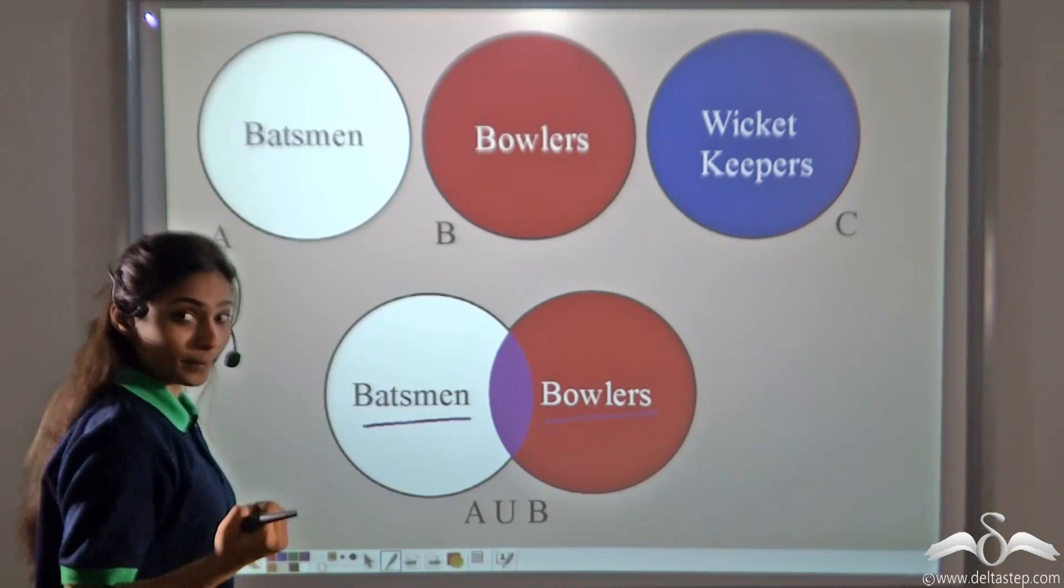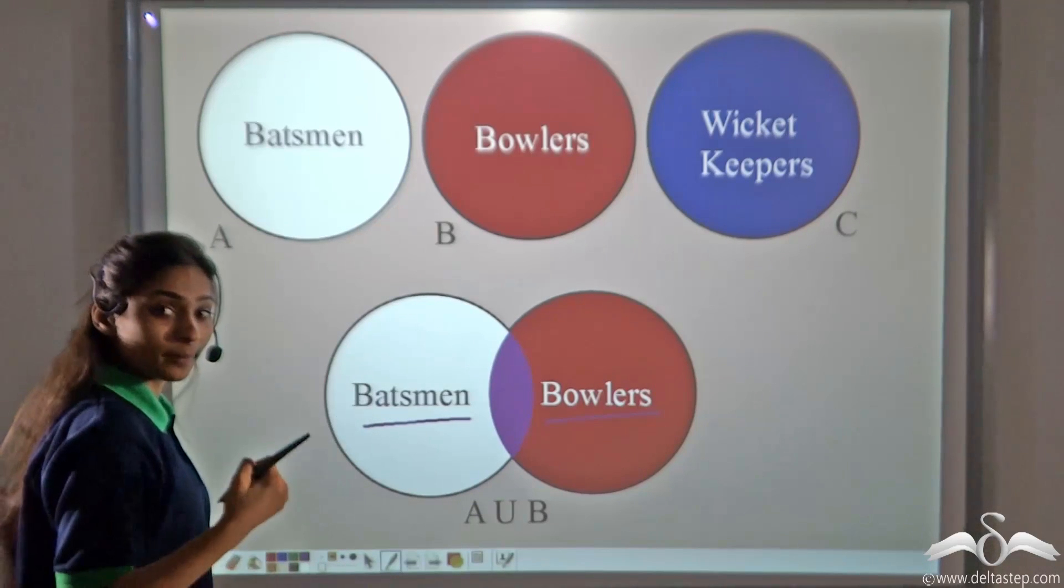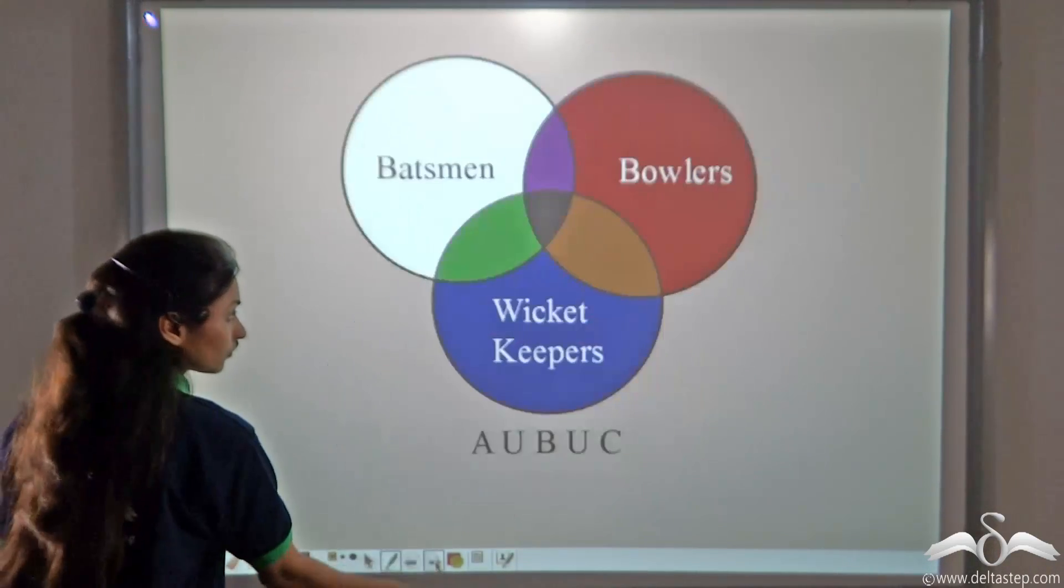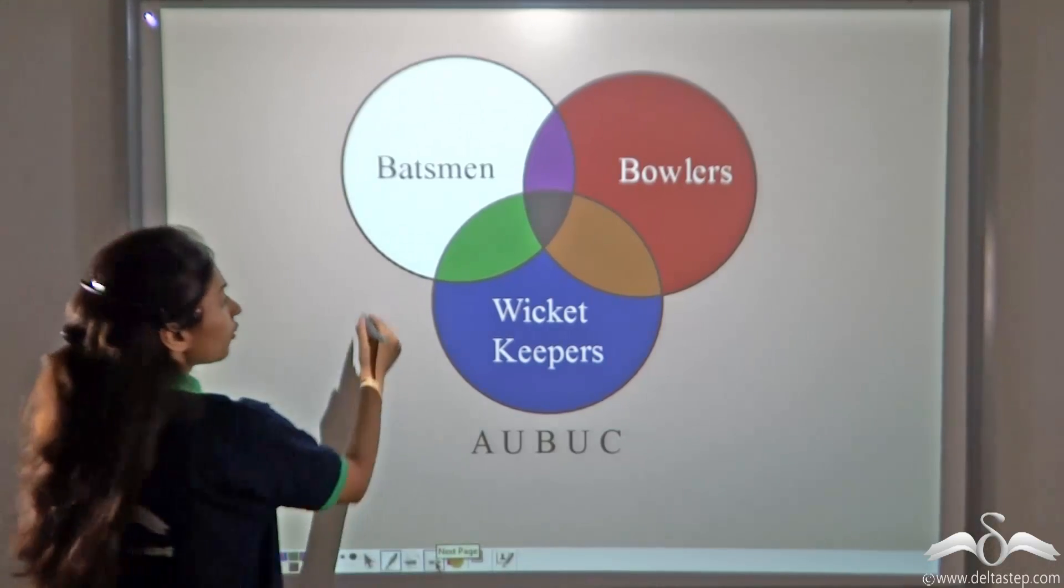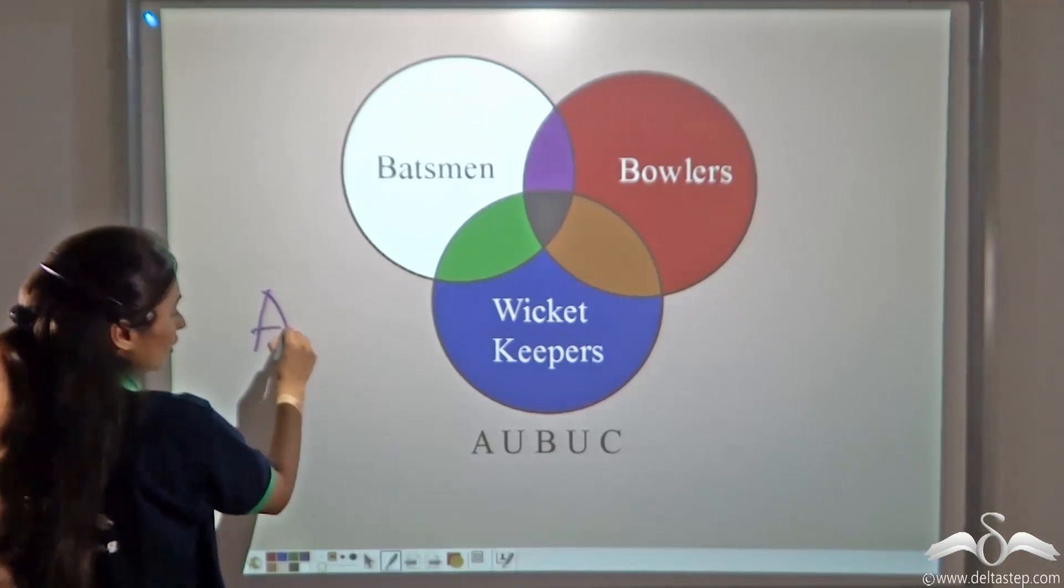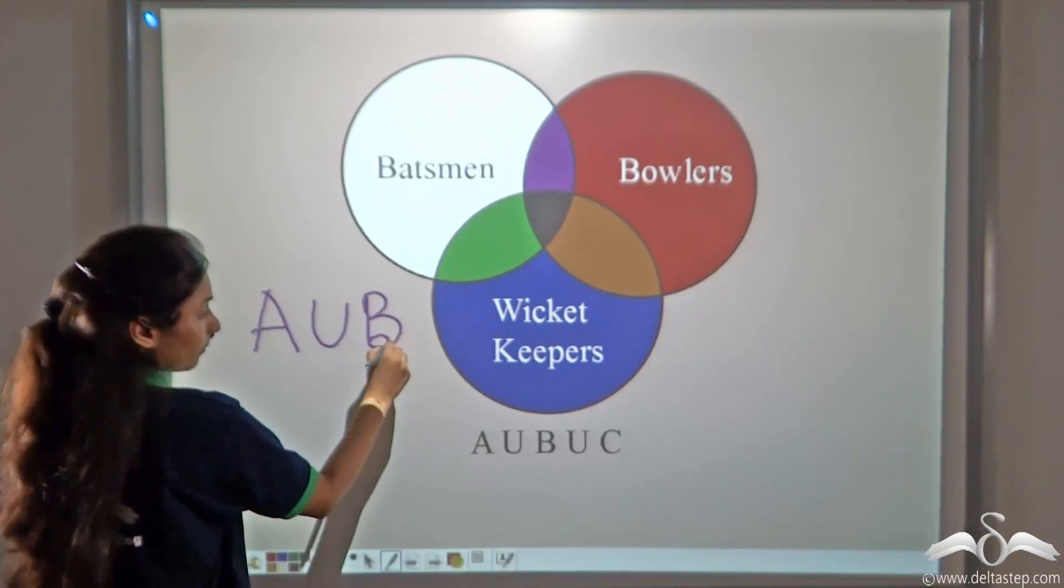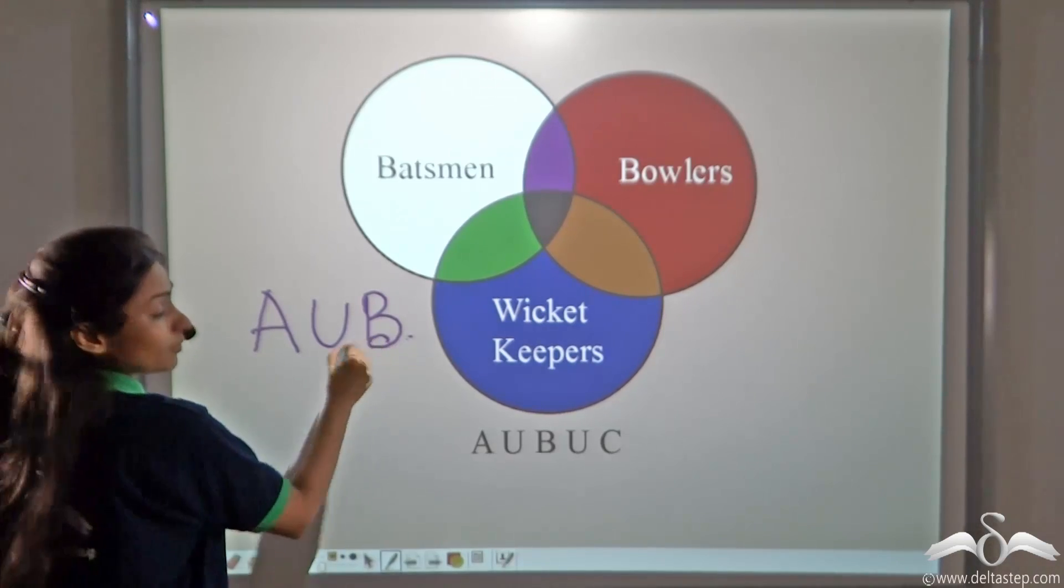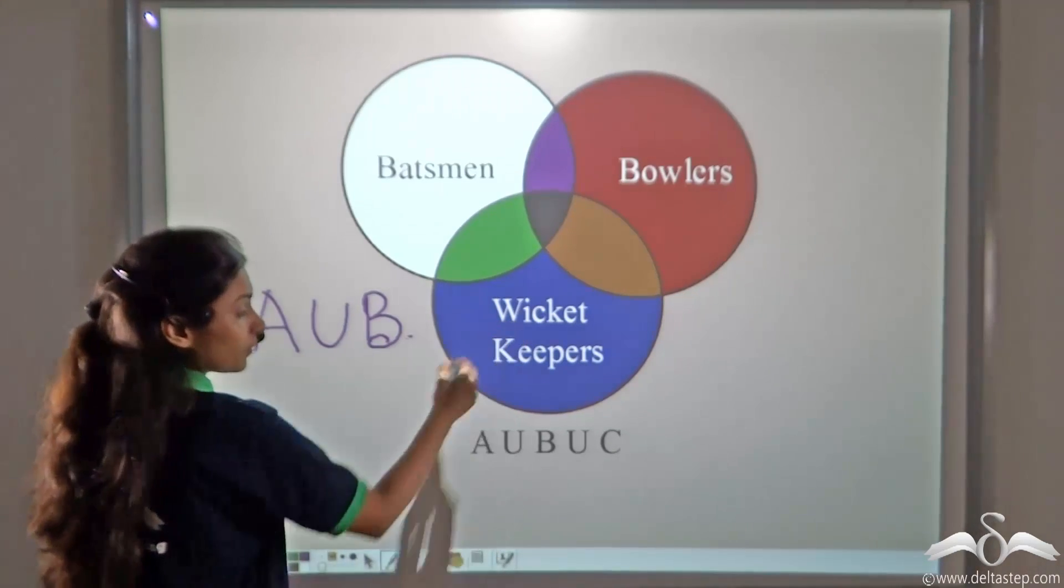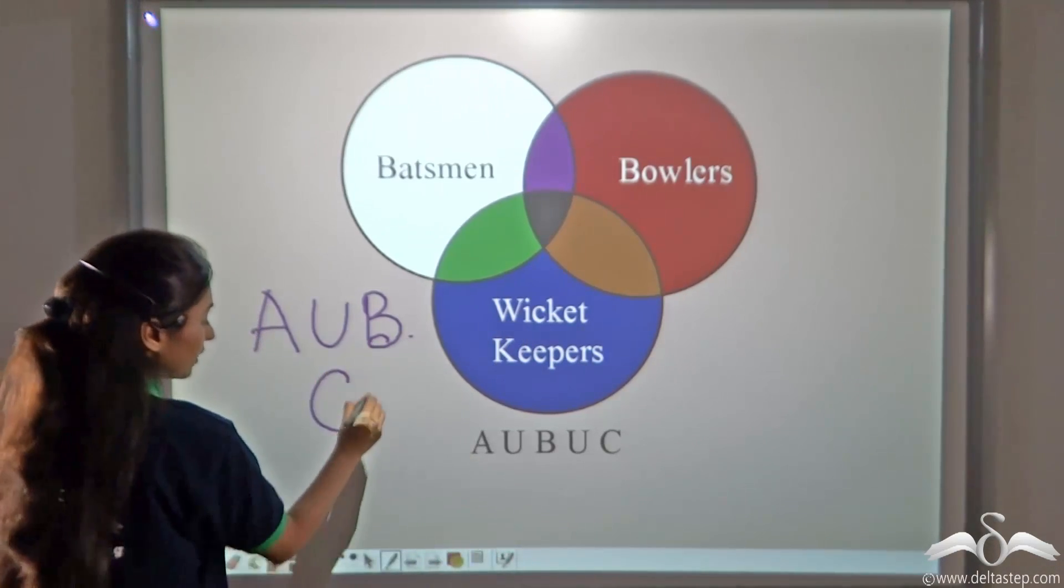For making a complete team, you will need wicket keepers as well. First of all, you had A union B with you. But then you realized that your team is not complete. You need wicket keepers as well. You need a team C as well.